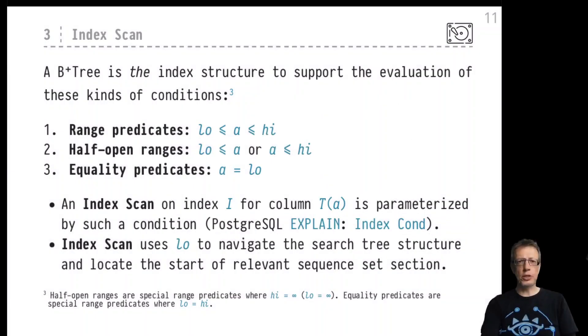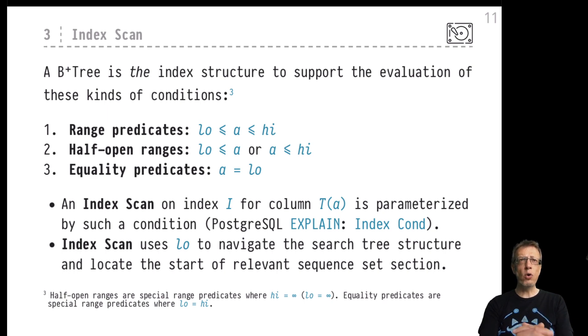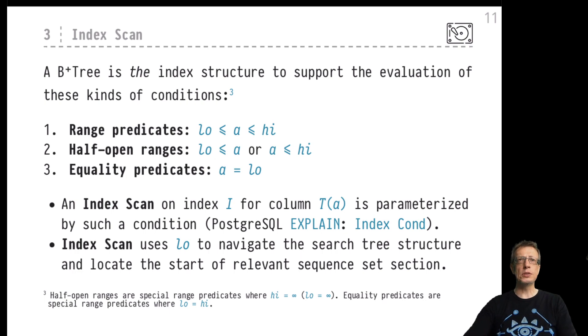Welcome back to DB2 and our discussion of the B+ tree structure in PostgreSQL and in relational database systems in general. Now that we have looked at the internals of the leaf nodes, inner nodes, and the root node of our B+ trees, let's view B+ tree indexes from the viewpoint of the query engine — how can we benefit from the presence of such B+ trees when it comes to the speedy evaluation of queries, particularly those that specify predicates on the index columns.